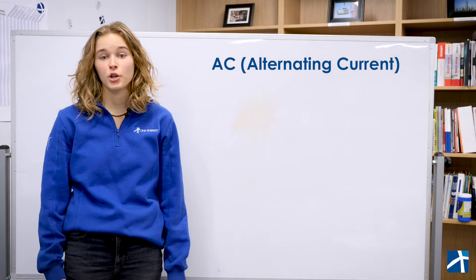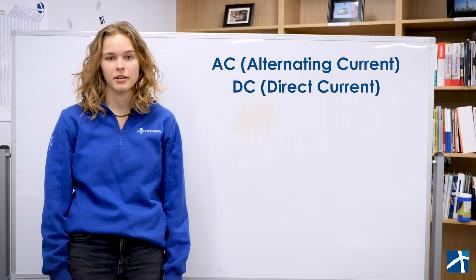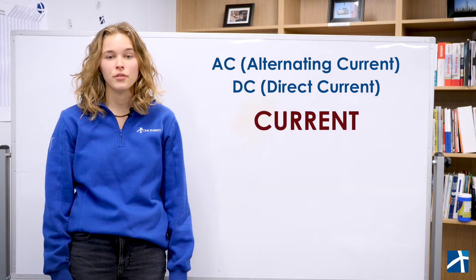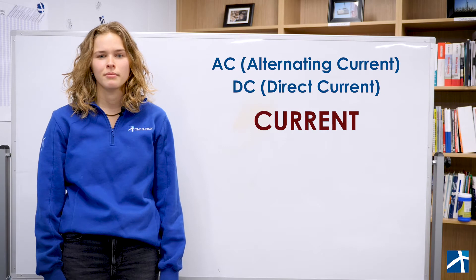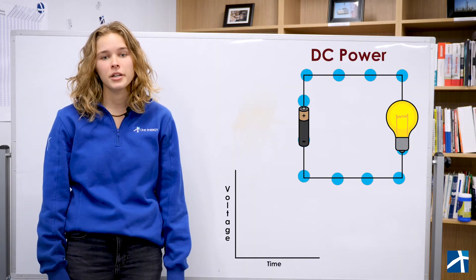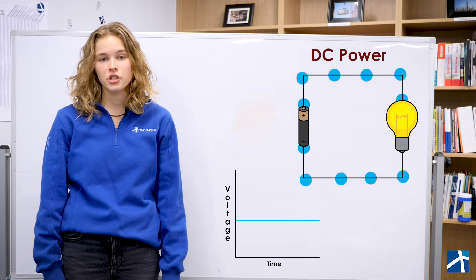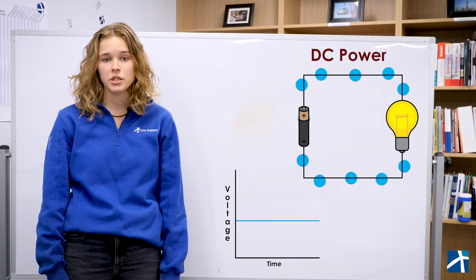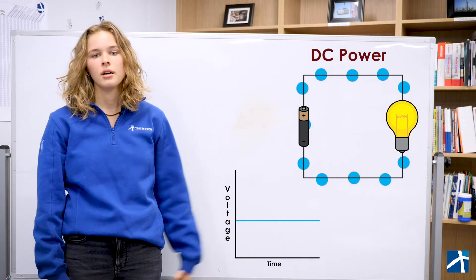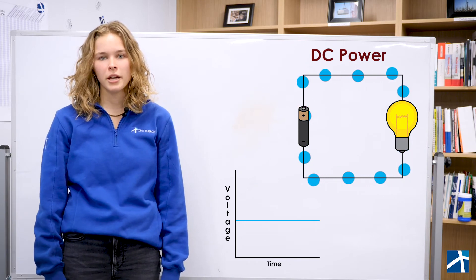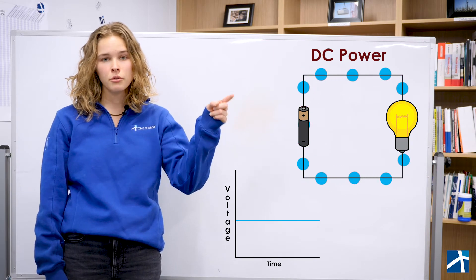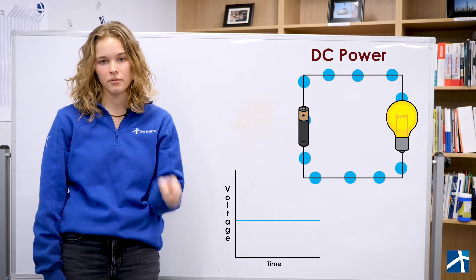So AC and DC both share that term we just learned — current — and we know that current is the flow of charged electrons over time. DC power is supplied at a constant voltage. The current can change depending on how quickly we want to use the electric charge, but it is always flowing in the same direction. A battery is a good way to think about this: it has a constant voltage, and current always flows out of the positive end, through the circuit to provide power, and back to the negative end.